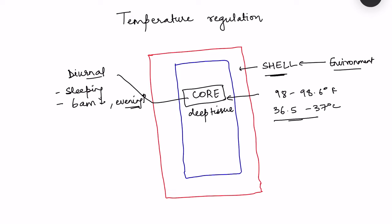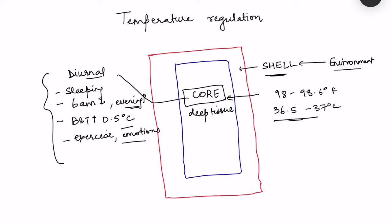This is important to keep in mind when recording body temperature. Similarly, in women, during ovulation the basal body temperature increases by 0.5 degrees Celsius. There is also an increase with exercise, and depending on the emotional state of the person, with an increase in emotion this core body temperature also increases. These are the normal variations of core body temperature.